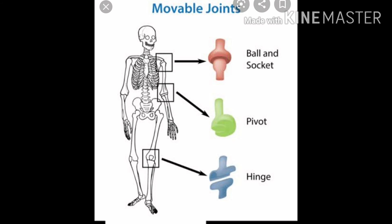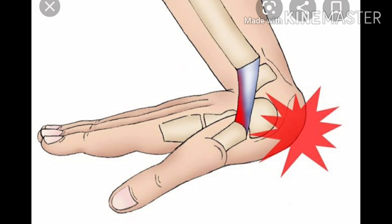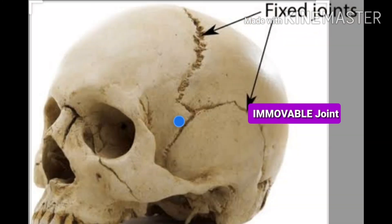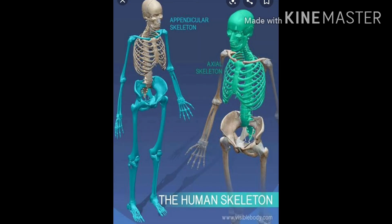Joints which can move are called movable joints. For example, we can easily move our wrist and ankle because we have movable joints there. On the other hand, we cannot move our skull parts because the joints in our skull are immobile. However, some joints can move to a certain extent — like the joints in our backbone, which move very little. They provide flexibility to the body but have limited movement; you cannot rotate your backbone.